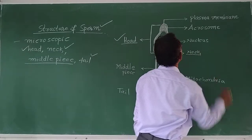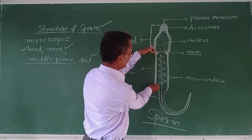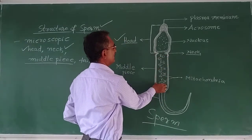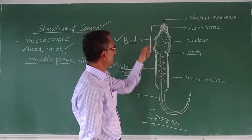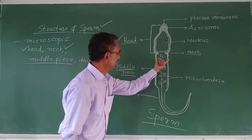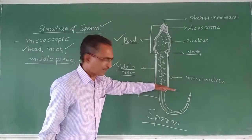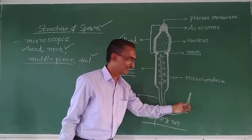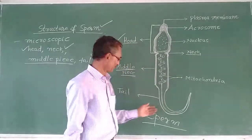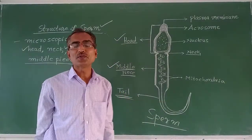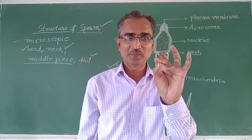After the head, you can see from here to here is the neck. And from the neck up to here, this part is the middle piece. After the middle piece comes the last structure, which you can easily guess — it is the tail, a tail-like structure. So the sperm is microscopic in nature and contains a head, neck, middle piece, and tail.